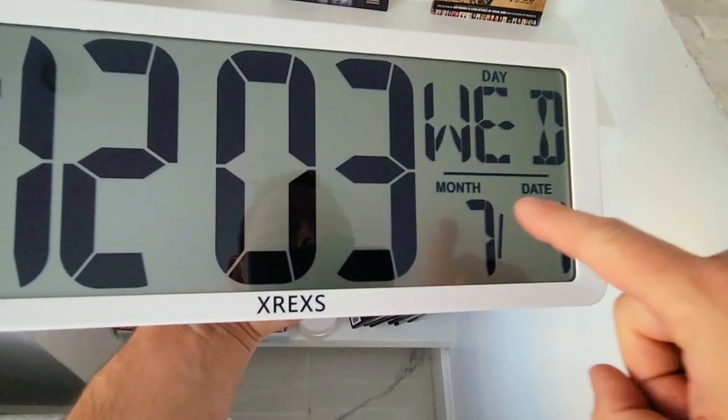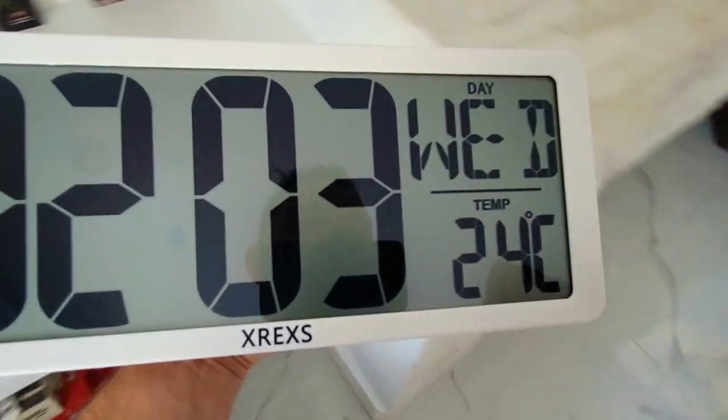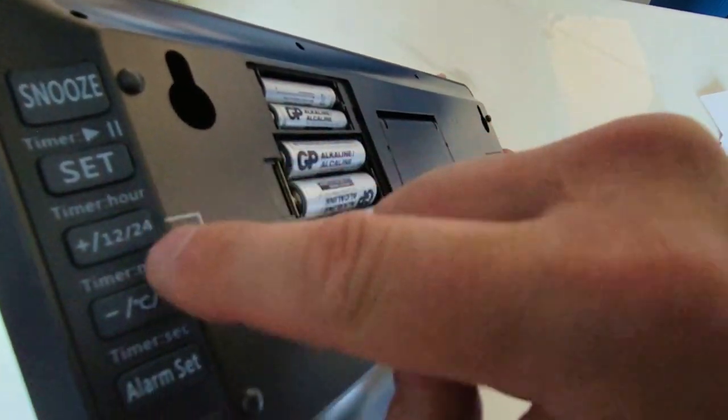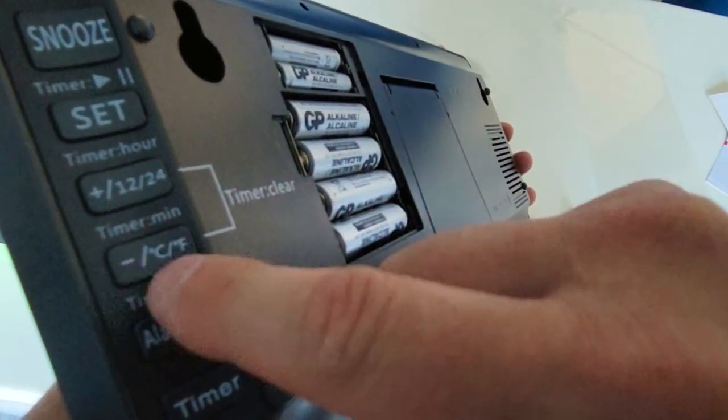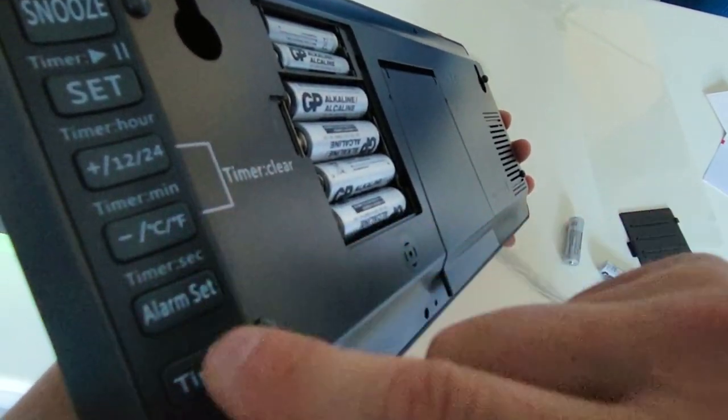Day is displayed, month is displayed, temperature is displayed. Snooze set, plus and minus, your timer, your hour, your Fahrenheit Celsius switcher, your alarm set, and then this is your stopwatch basically.